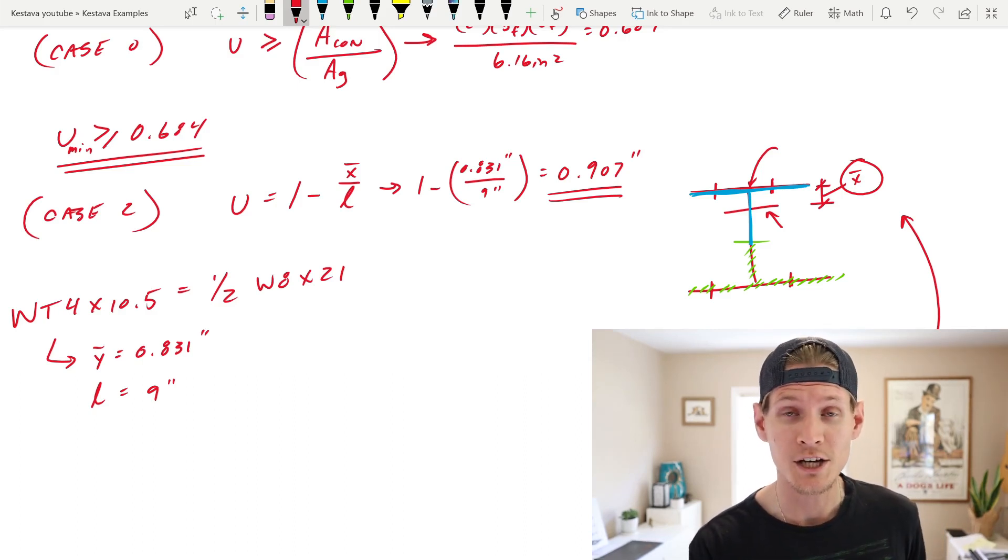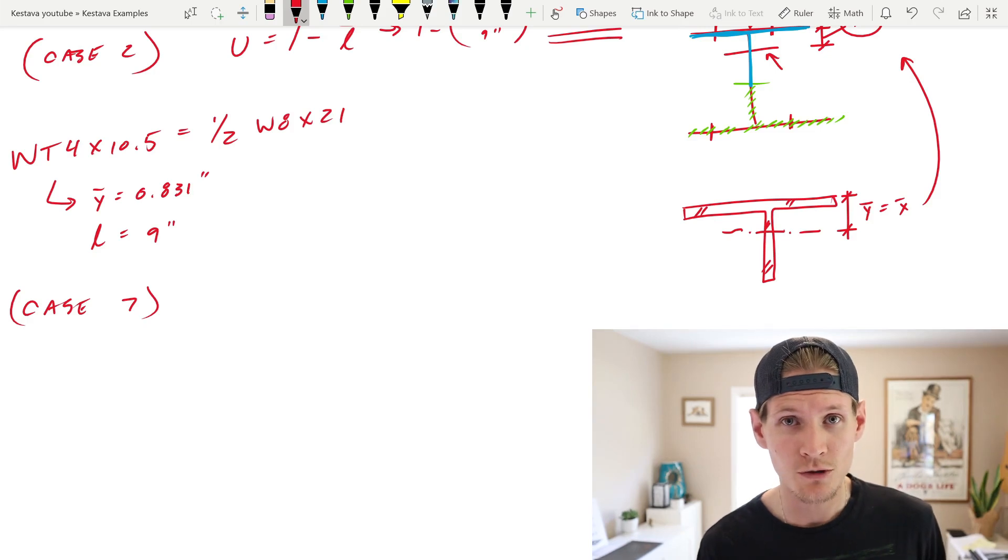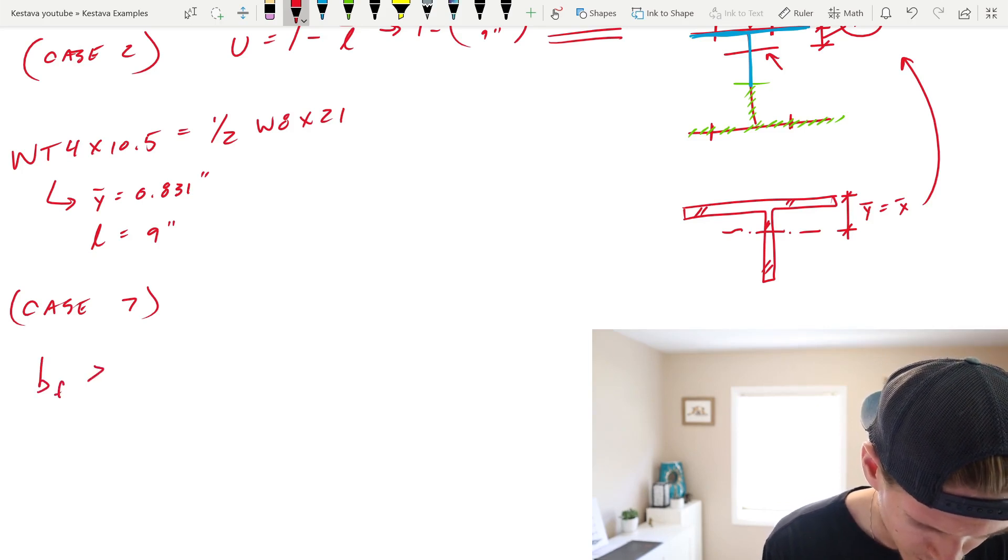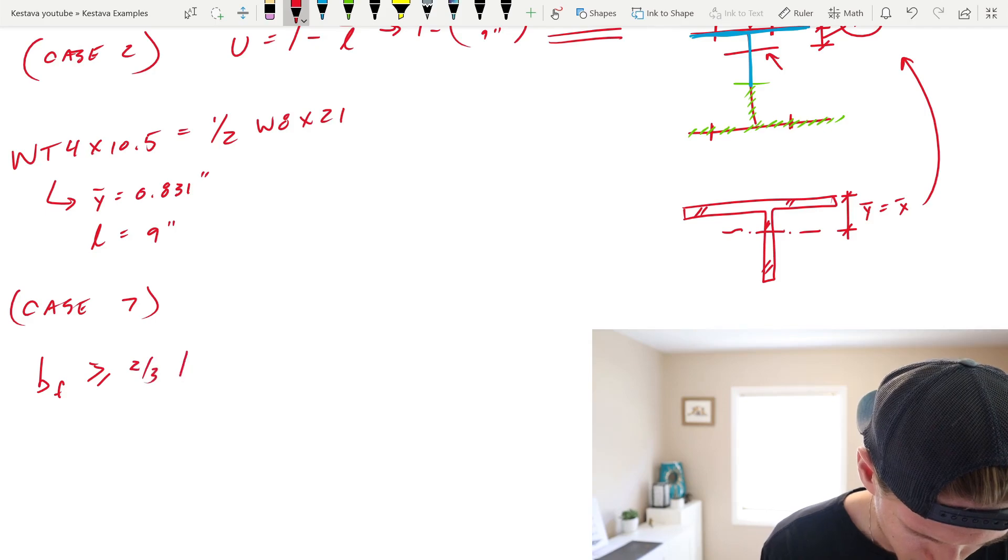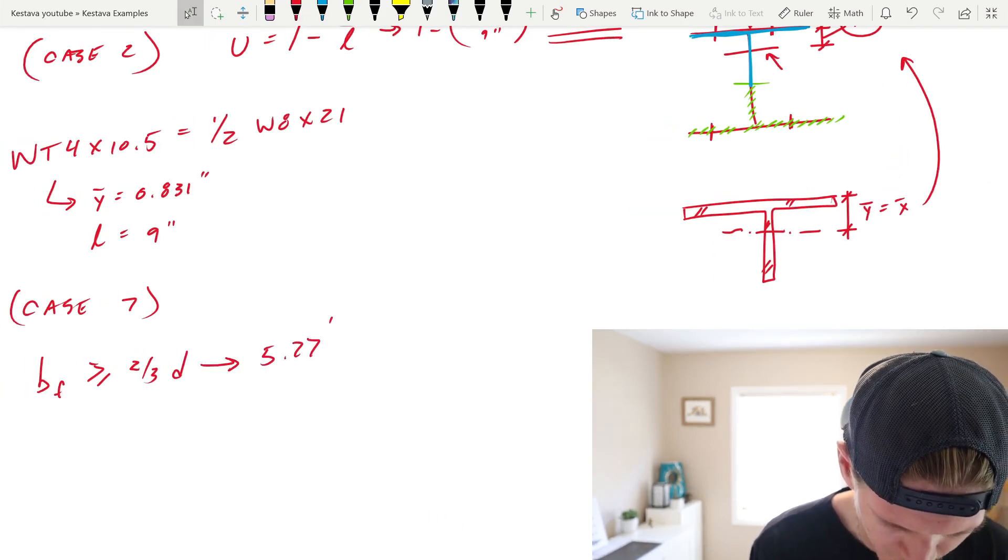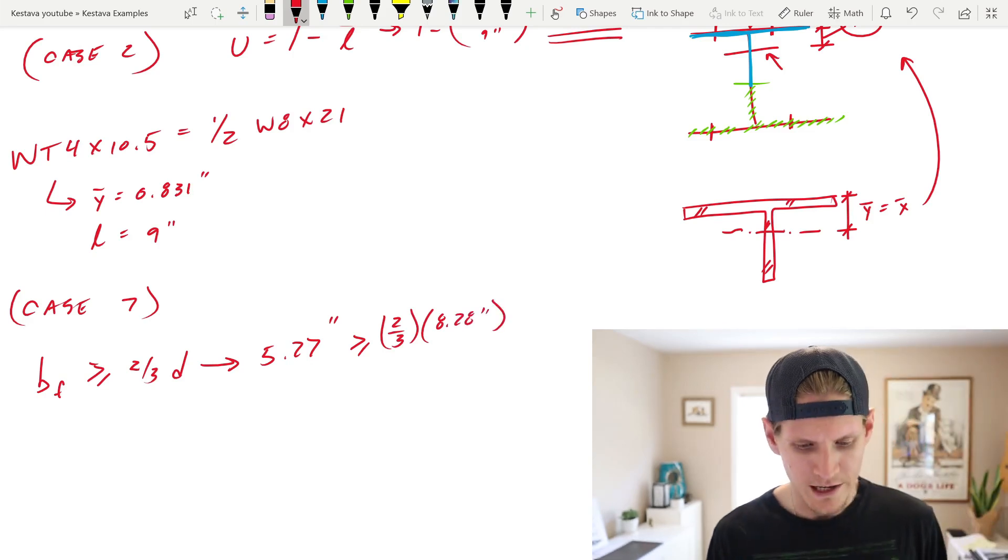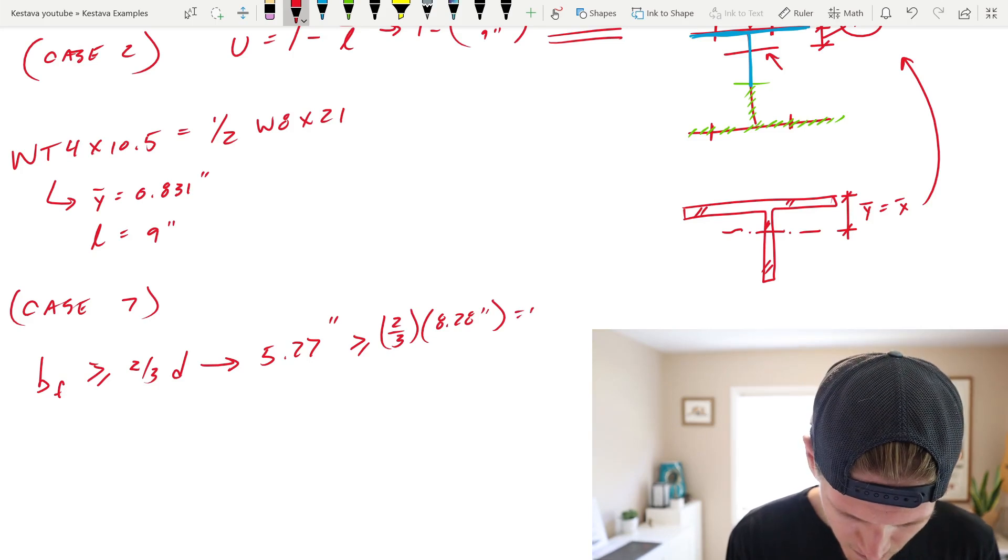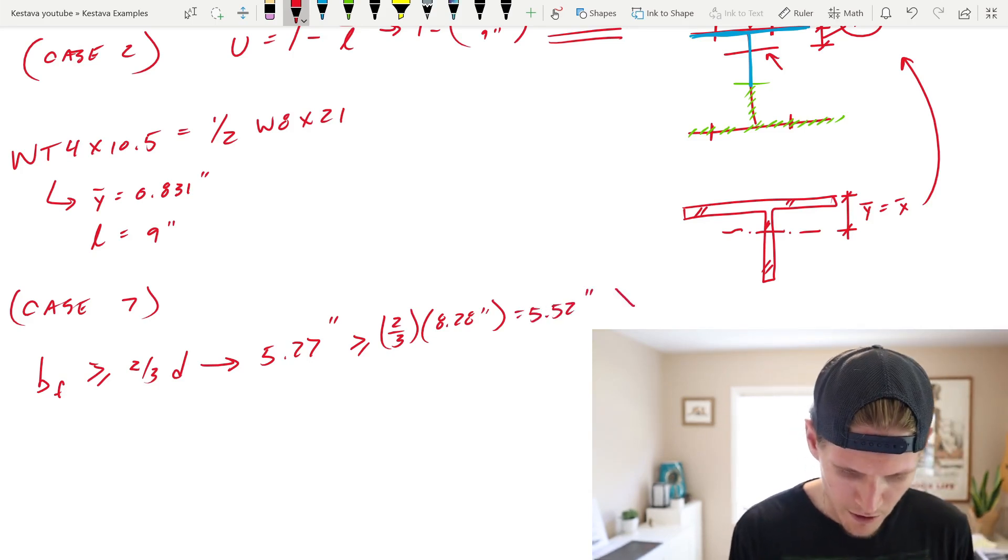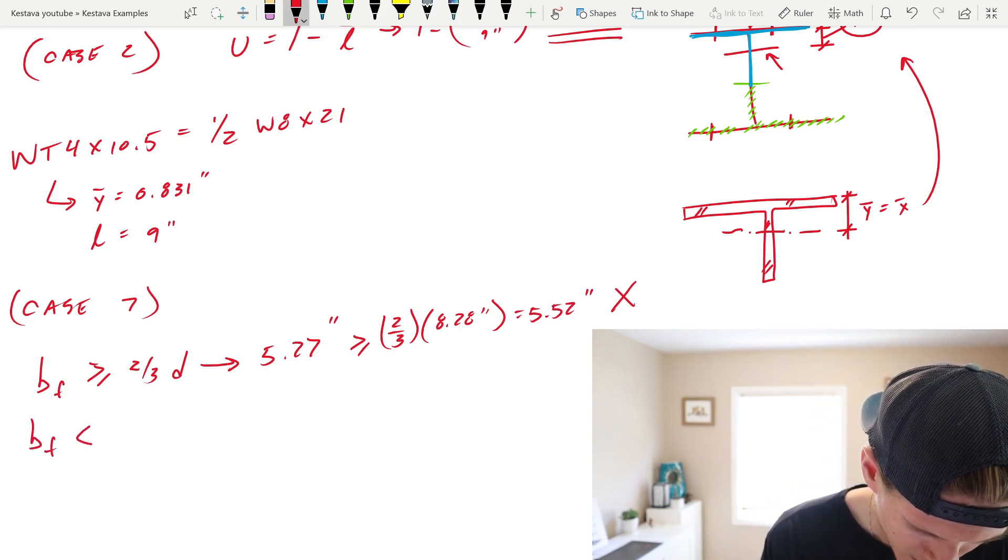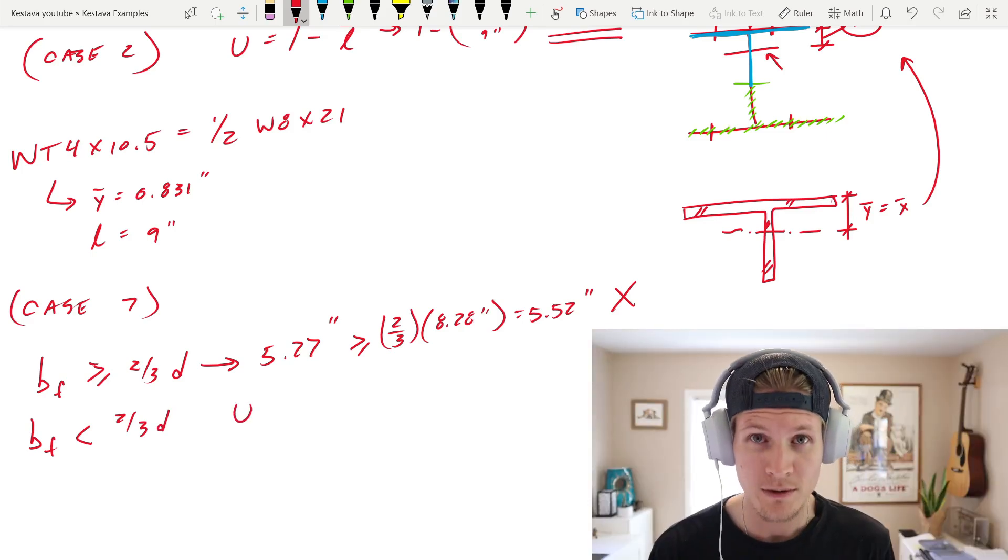If we go back to the table in chapter D, not in the commentary, you will see that we actually have one more case that we should solve for. That's case 7. Case 7 just gives you two different criteria. Is the base flange less than or greater than the two-thirds of the depth of the member? We need to figure that out. That's easy. Let's see if base flange is greater than or equal to two-thirds of the depth of the member. Base flange is 5.27 inches. And is that greater than two-thirds of the depth, which is 8.28 inches. Again, if you forgot these numbers, they are located in table 1-1 at the beginning under the wide flange size of 8 by 21. Two-thirds of 8.28 equals 5.52 inches. So this is not true. So the base flange is less than two-thirds of D. That means U equals 0.85.